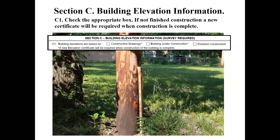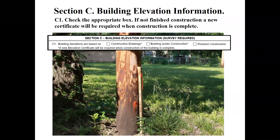Section C of the elevation certificate is where elevation information is included. Section A was building information, Section B was flood map information, and Section C is the elevation information.